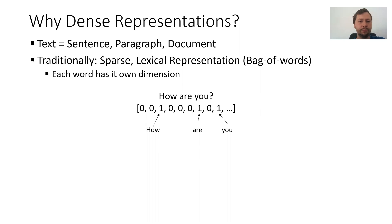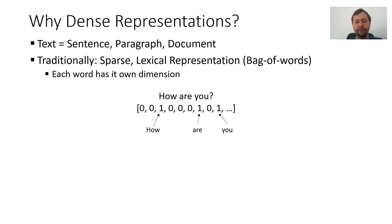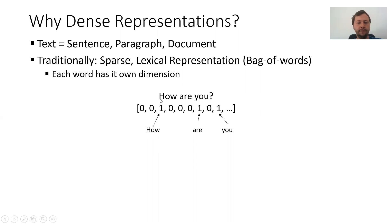Traditionally, when we represent text, we did it in a sparse lexical representation, also known as bag of words. Each word in your language has its own dimension. So for example, you have a vocabulary of the 50,000 most common words, and you create 50k-dimensional vectors. If the word is in the text, you set that position to one, and if it's not in the text, you set it to zero. So if you have the text 'how are you', you set three positions to one — the position for 'how', the position for 'are', and the position for 'you'.